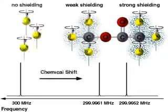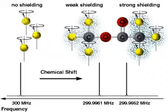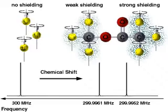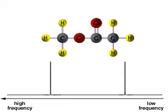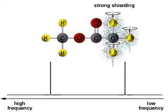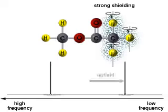The resonance frequency of a hydrogen in a molecule depends on its chemical environment and is called its chemical shift. The frequency axis of the NMR spectrum increases from right to left. Strongly shielded hydrogens, which have lower resonance frequencies, appear on the right, called upfield.